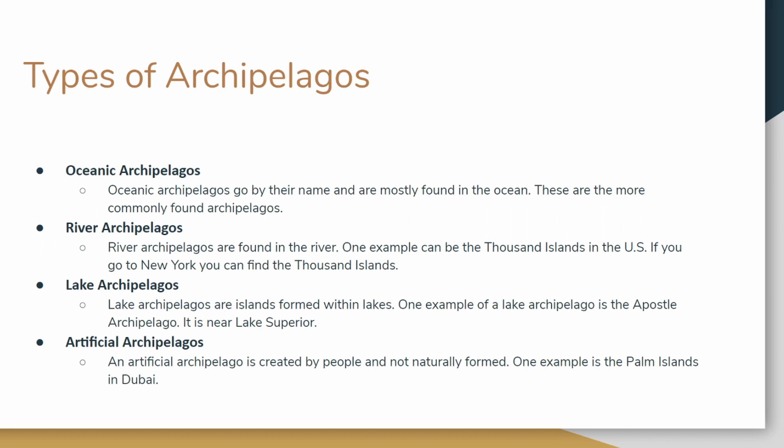The third type of archipelago is a lake archipelago. Lake archipelagos are formed within lakes. One example is the Apostle Archipelago, which is near Lake Superior. If you don't know what Lake Superior is, it's one of the five Great Lakes in the USA.